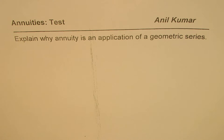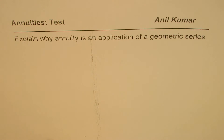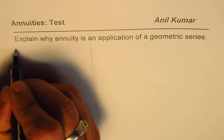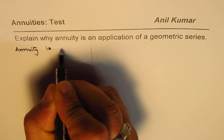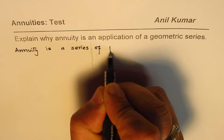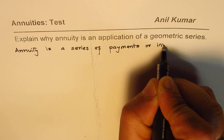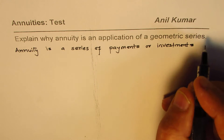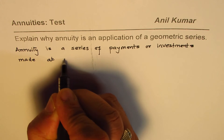Let's first define annuity. An annuity is a series of payments or investments made at regular intervals of time.